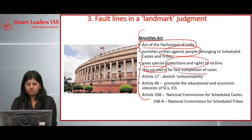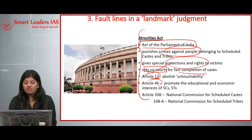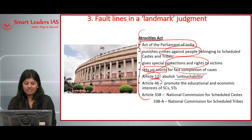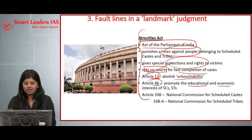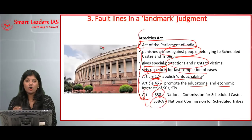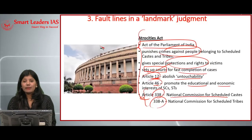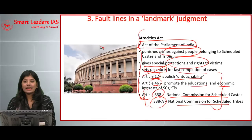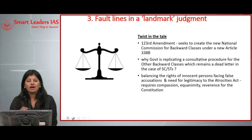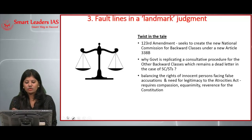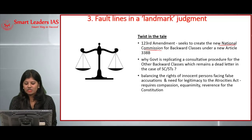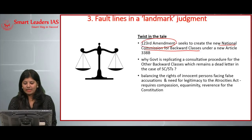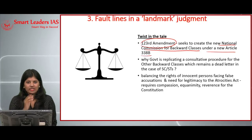In our Constitution, there are four major articles relevant here: Article 17 explicitly abolishes untouchability; Article 46 promotes the educational and economic interests of SC/ST people; Article 338 establishes the National Commission for Scheduled Castes; and Article 338A establishes the National Commission for Scheduled Tribes. Additionally, the government is trying to establish a National Commission for Backward Classes through the 123rd Constitutional Amendment under Article 338B.